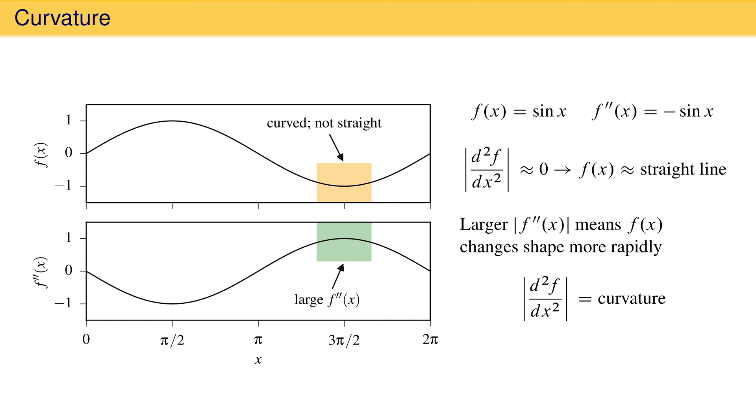As the curvature of a function becomes larger, the function changes its shape more rapidly and differs more from a straight line. Another way to say this is that a large curvature corresponds to a wiggly function.